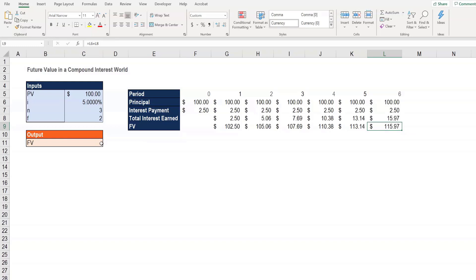If we want to calculate the future value using the formula, we can do that this way. The formula would be the PV multiplied by 1 plus the rate of interest divided by the number of compounding periods, raised to the power of the number of years multiplied by the number of compounding periods. And you can see that the number is exactly the same as we've done using the table of 115.97.